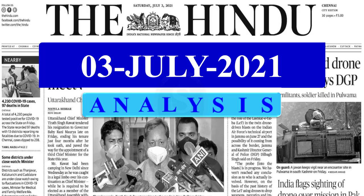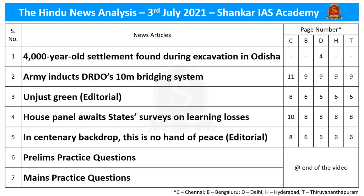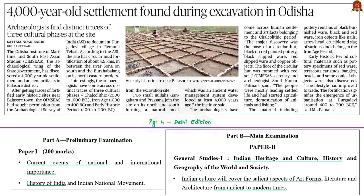Good evening viewers, welcome to the Hindu News Analysis by Shankar IAS Academy for the date 3rd of July 2021. This is the list of news articles taken for today's discussion, provided along with page numbers in different editions of the Hindu Newspaper. Let us start our analysis with the first article, which appeared in the Delhi edition and is related to the ancient history part of our syllabus.